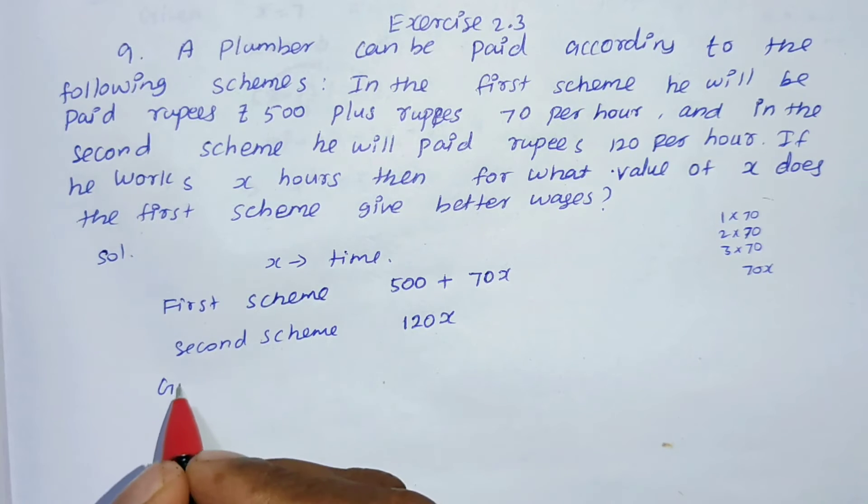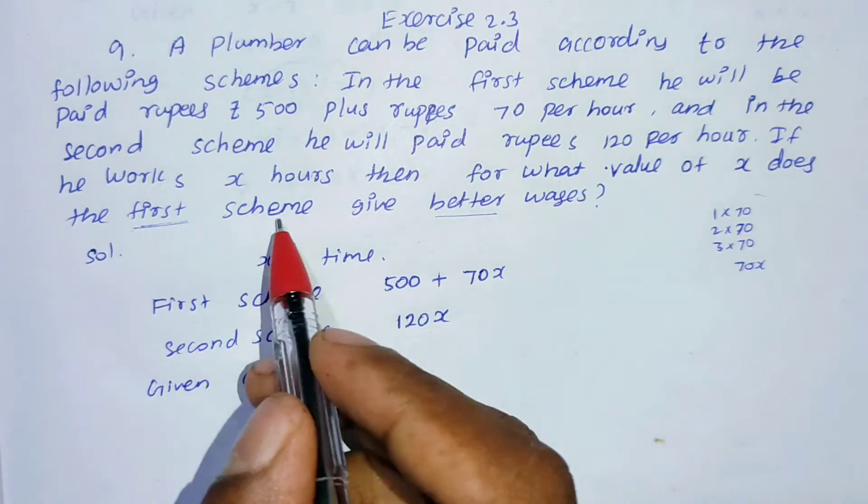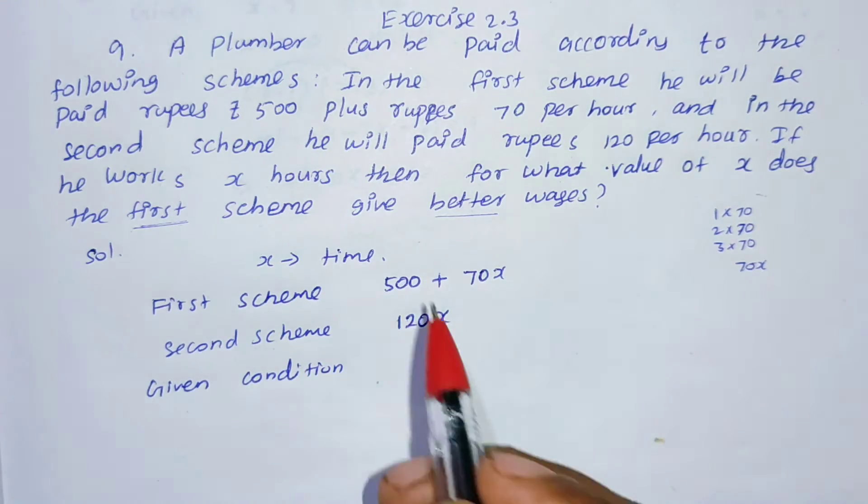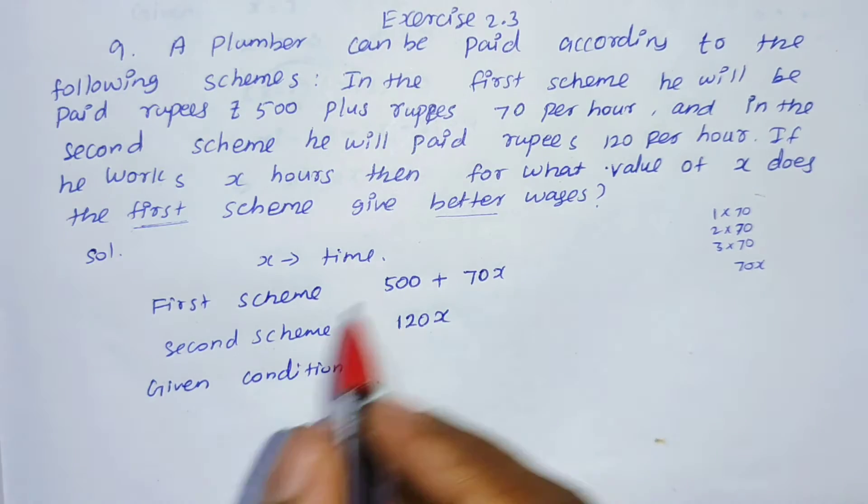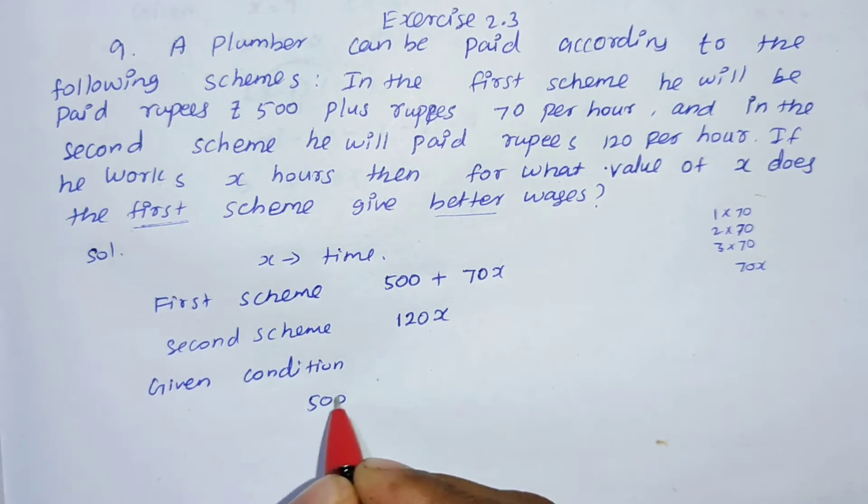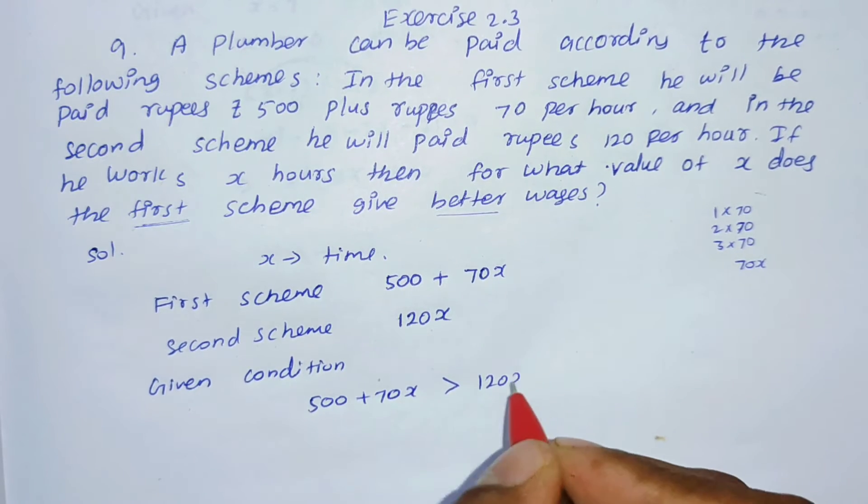Given condition: first scheme is better wages, first scheme is higher salary. Now we will find when first scheme, 500 plus 70x, is greater than 120x.